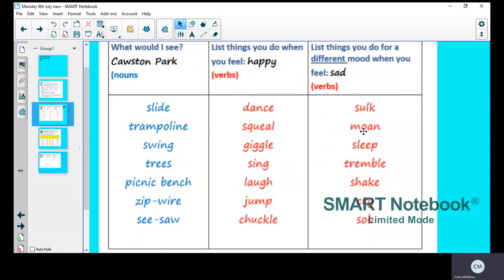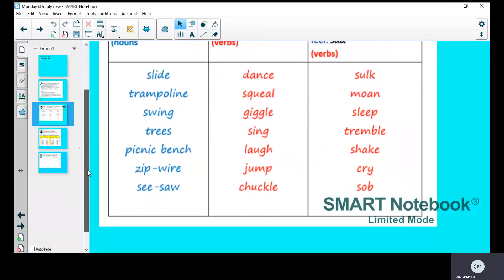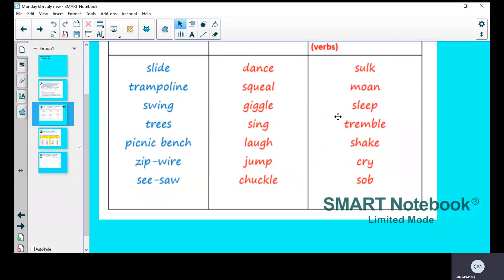And then what I did was think of seven things or seven verbs that the objects might do when they're sad. So sulk is to be upset, moan, sleep, tremble is like shaking, shake, cry, sob. So these are things you might do when you're sad.